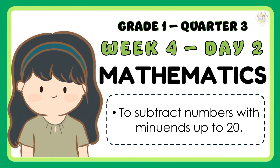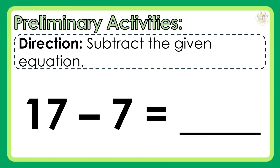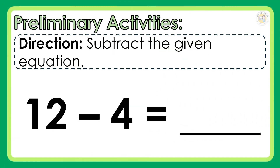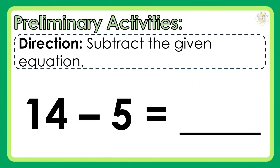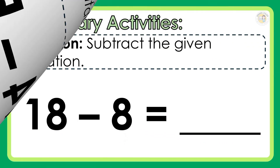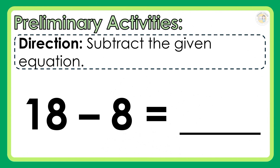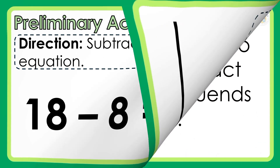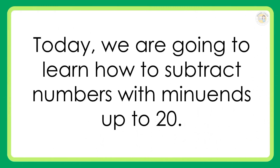Week 4, Day 2. To subtract numbers with minuends up to 20. Direction: subtract the given equations. 7 minus 7 is equal to? 12 minus 4 is equal to? 19 minus 6 is equal to? 14 minus 5 is equal to? 18 minus 8 is equal to? Today, we are going to learn how to subtract numbers with minuends up to 20.